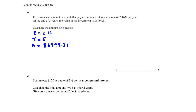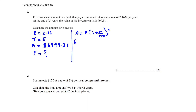The question has confused us by using the word 'amount' for principal. Whenever you invest money, the initial amount is always your principal — so we need to find P. Using the compound interest formula: A = P(1 + R/100)^N, we substitute: 6999.31 = P(1 + 2.16/100)^5.